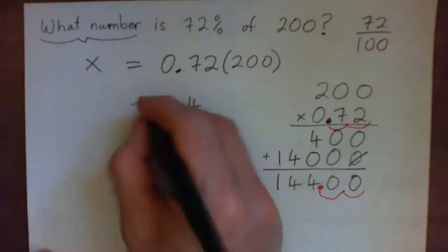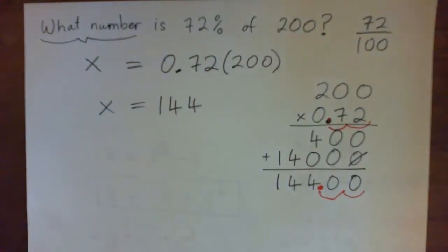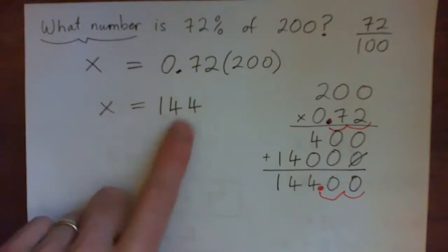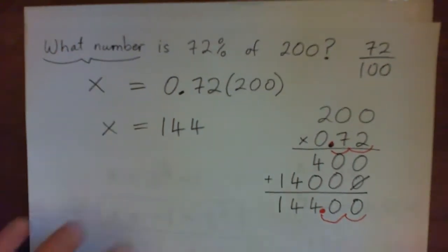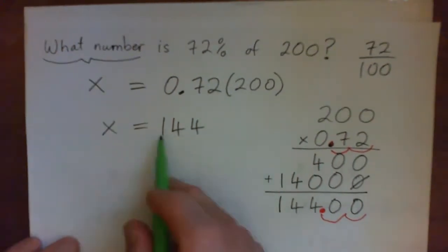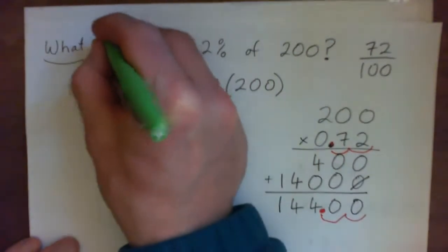Okay, so our answer is, our missing number is 144. Now let's check that in the sentence and see if it makes sense. 144.